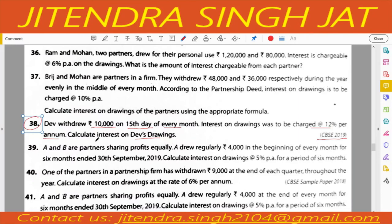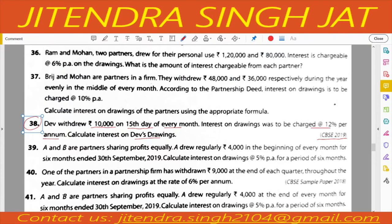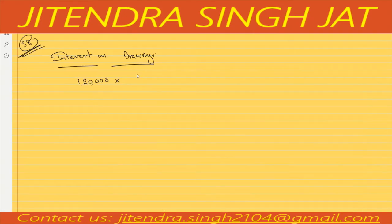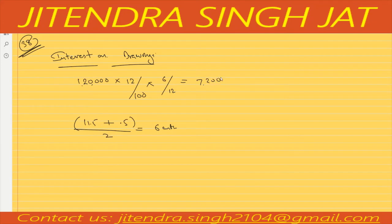How much did he withdraw? 10,000 on the 15th day of every month. There are 12 months in a year, so total drawing = 10,000 × 12 = 1,20,000. The rate is 12% per annum. He withdrew on the 15th of every month, so: time left after first drawing = 11.5 months, time left after last drawing = 0.5 months. Dividing by 2 gives 6 months. So: 1,20,000 × 12% × 6/12 = 7,200. That is the interest on drawing of Dev.